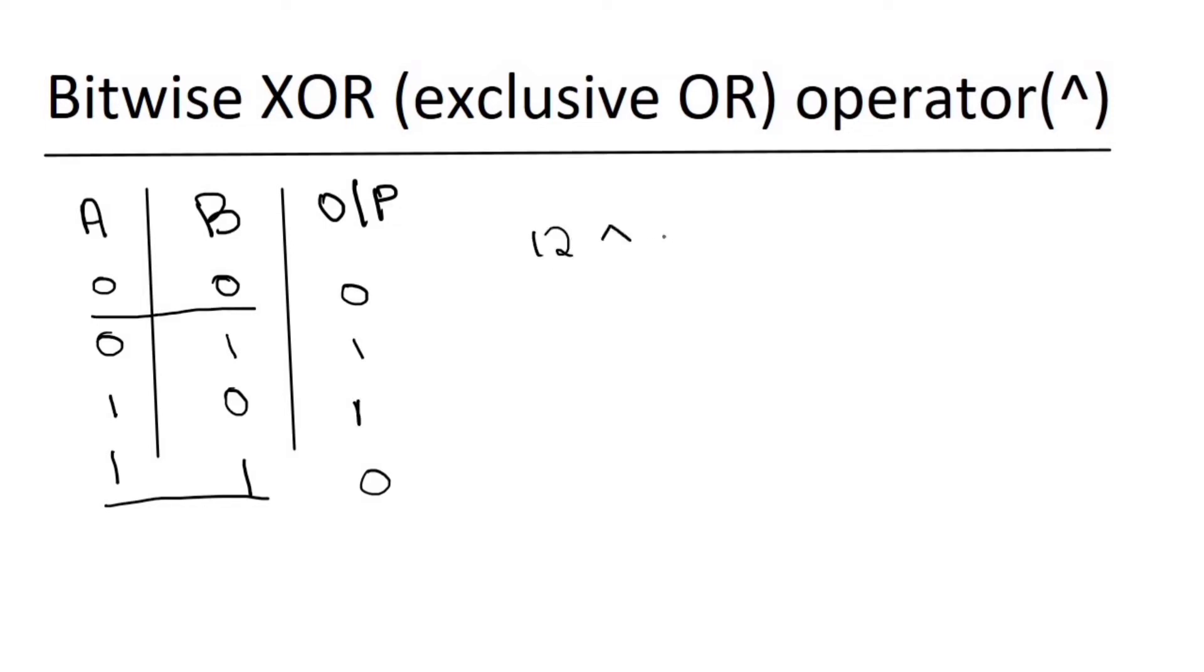12 XOR 25. Let's write the binary equivalent. For 12 it is 16 8 4 2 1: 0 1 1 0 0.